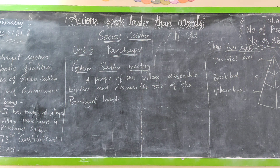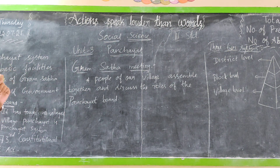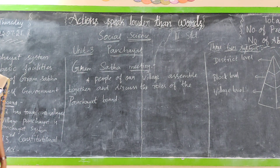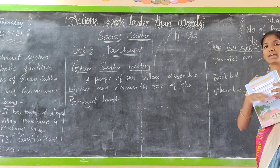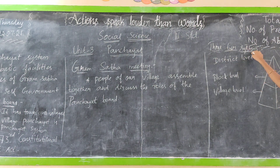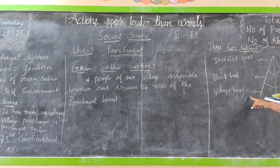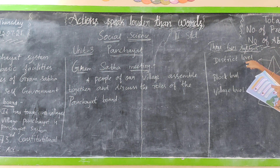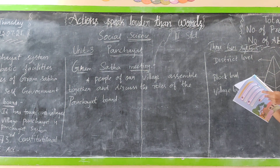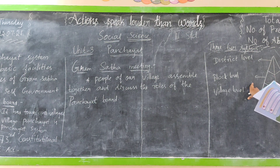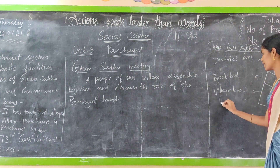The 73rd Constitutional Amendment Act established the three-tier system of Panchayat. Panchayats have been set up in every village with 500 people and above. The three tiers are: the first is district level, the second is block level, and the third is village level. At the district level there is the District Panchayat, that is Zilla Parishat. At the village level we have the Gram Panchayat.